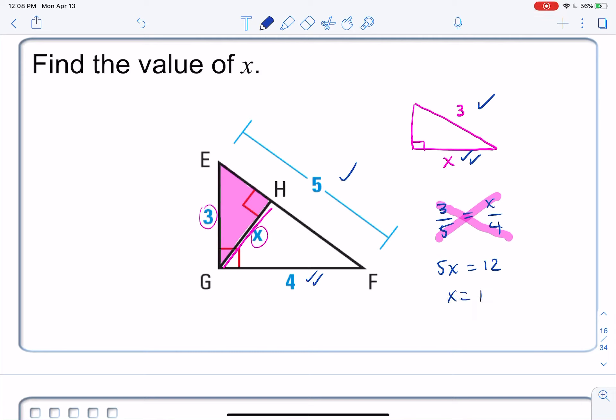And X is equal to 12 over 5. Or if you prefer, that would go in there two times with two left over 0.4. 2.4.